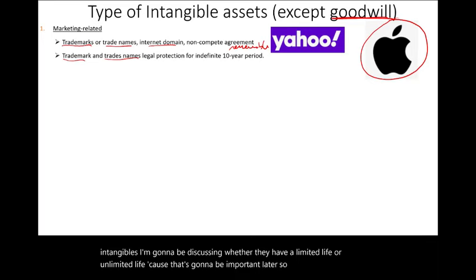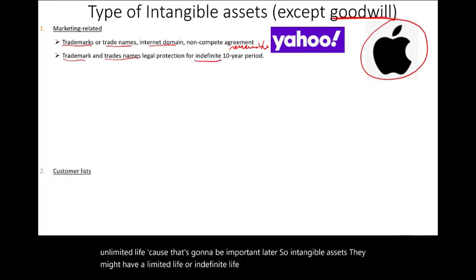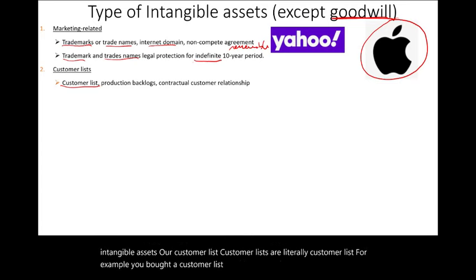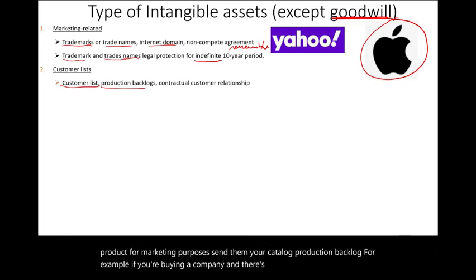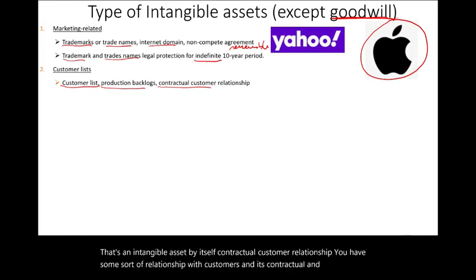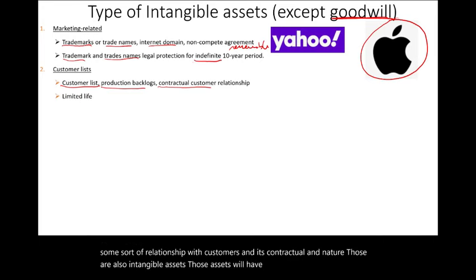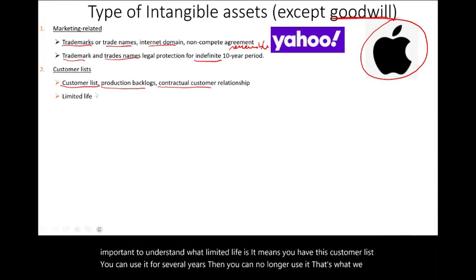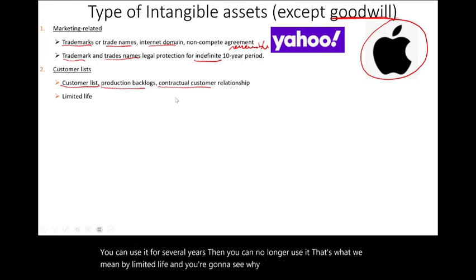Intangible assets may have a limited life or indefinite life, which is unlimited. Another type is customer-related intangible assets — literally customer lists. For example, you buy a customer list to email or mail your products for marketing purposes, send catalogs, or acquire a production backlog. Contractual customer relationships are also intangible assets. These assets will have a limited life — meaning you can use the customer list for several years and then you can no longer use it.